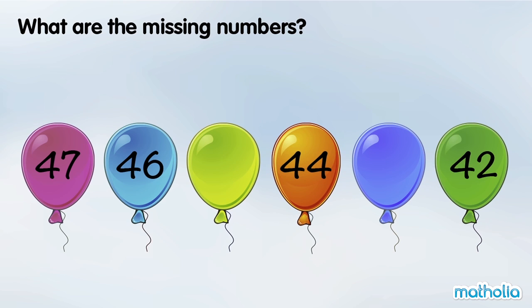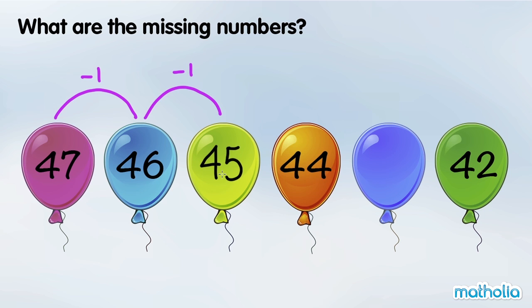What are the missing numbers? 47 minus 1 is 46. In each step, the numbers are going down by 1. 46 minus 1 is 45. 44 minus 1 is 43. The missing numbers are 45 and 43.